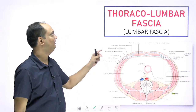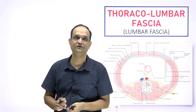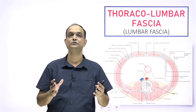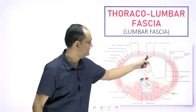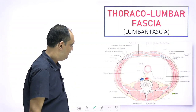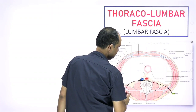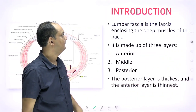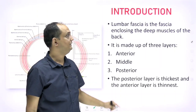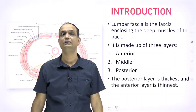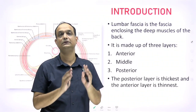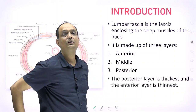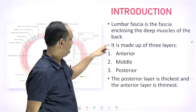Today we will discuss the thoracolumbar fascia, also known as the lumbar fascia. This fascia is a feature of the posterior abdominal wall. When you see a transverse section of the abdominal cavity, you will find it in the posterior area where the paravertebral muscles are located.